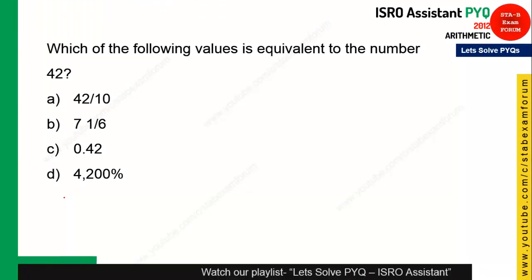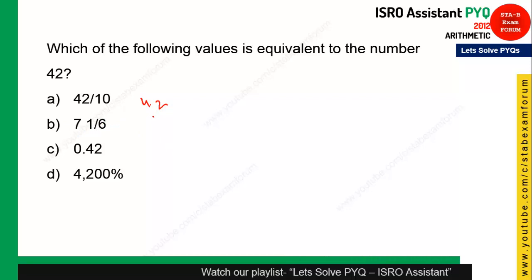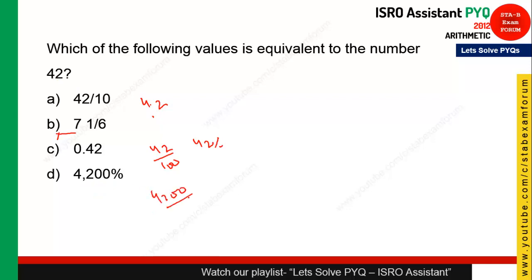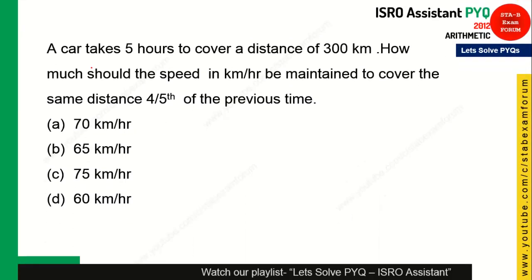Which of the following is equivalent to the number 42? The option 4.2 is not 42; 76% of something is not 42; 43/6 is wrong; but 0.42 is 42/100, i.e., 42%. If we use 4200/100 we get exactly 42. Option D is the right answer.